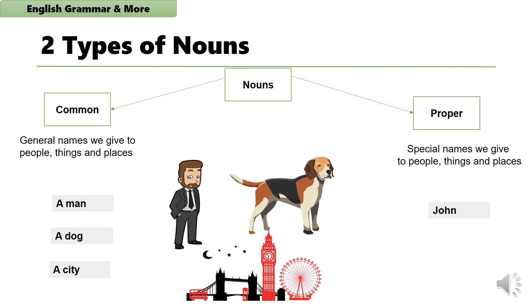For example, John. John is a special name given to a man. Or Coco. Coco is a special name that may be given to a dog. Or London. London is a special name given to a city.